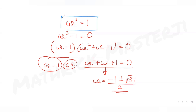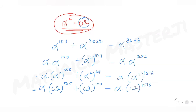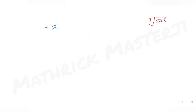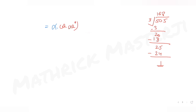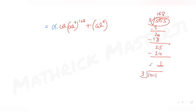Since ω³ = 1, we convert all powers of omega by dividing by 3. For ω^505: dividing 505 by 3 gives quotient 168 remainder 1, so ω^505 = (ω³)^168 · ω = 1^168 · ω = ω. For ω^1011: dividing 1011 by 3 gives quotient 337 remainder 0, so ω^1011 = (ω³)^337 = 1.